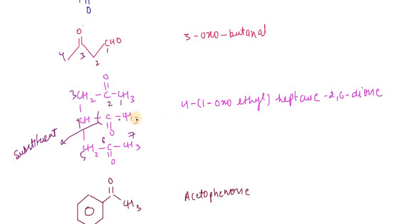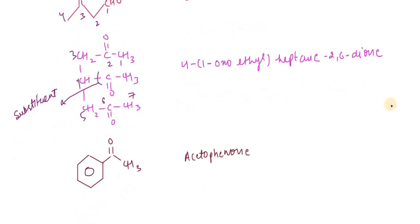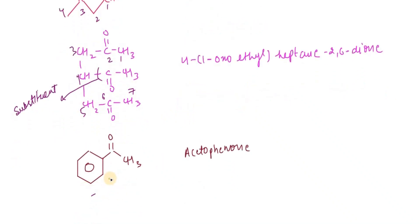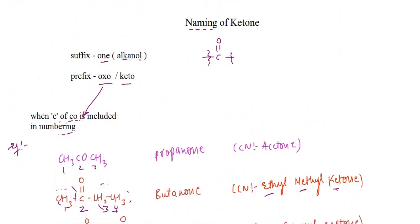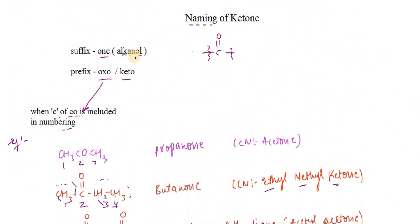When this is a substituent, it is named as 1-oxoethyl, or the common name we use for this compound is acetophenone. So we can name ketones using both common and IUPAC naming systems.